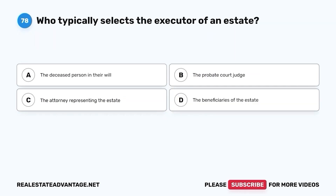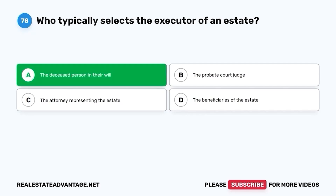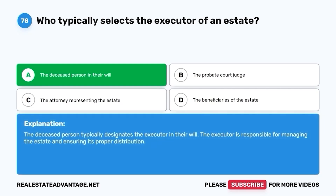Question 78. Who typically selects the executor of an estate? A. The deceased person in their will. B. The probate court judge. C. The attorney representing the estate. D. The beneficiaries of the estate. The correct answer is A. The deceased person in their will. The deceased person typically designates the executor in their will. The executor is responsible for managing the estate and ensuring its proper distribution.